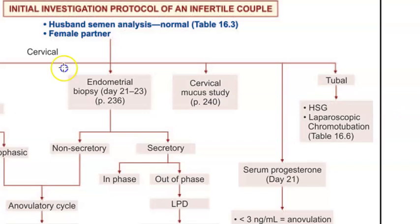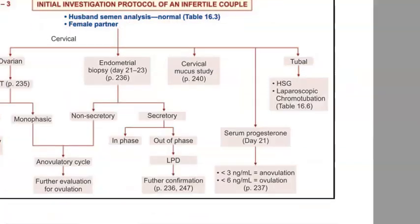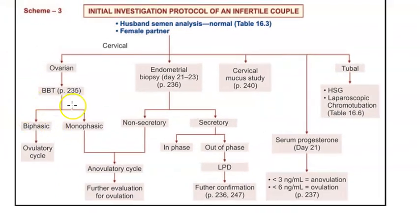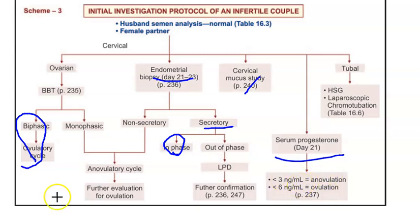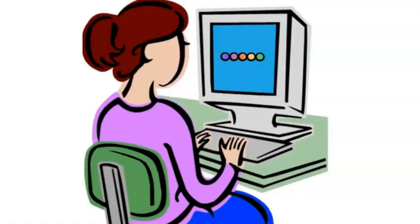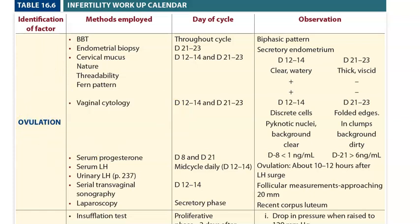This is the initial investigation protocol for female infertility. For the ovary, basal body temperature is checked - if it is biphasic it is ovulatory, which is good. For the endometrium, if it is secretory then it indicates ovulation. For cervical mucus, during ovulation it should be clear and watery. For serum progesterone, if it is less than six it is ovulatory, but less than three is anovulatory.